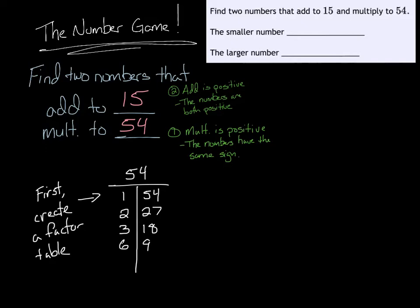Now I have all these pairs: 1 times 54, 2 times 27, 3 times 18, and 6 times 9. These are all the possible multiplications that are both positive that multiply to be 54. Now all I need to do is figure out which of these pairs also adds to be 15. So I'm just going to add these together.